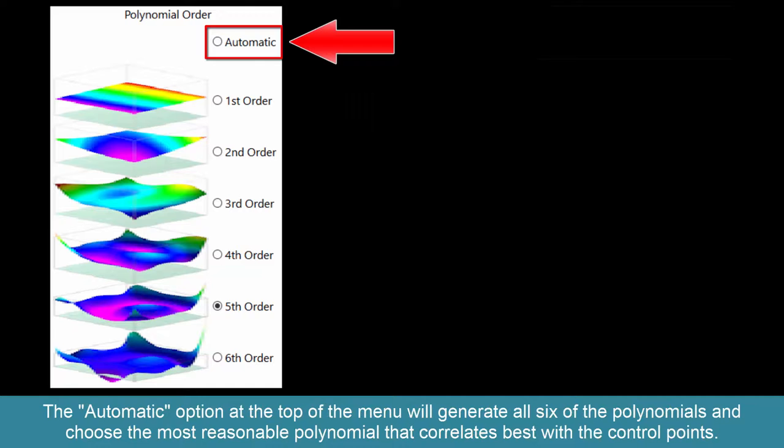The automatic option at the top of the menu will generate all six of the polynomials and choose the most reasonable polynomial that correlates best with the control points.